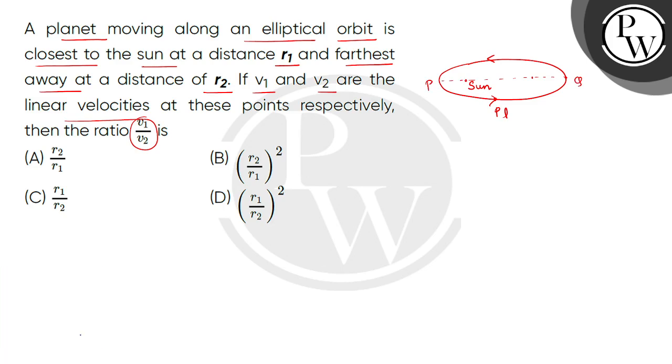Here, when the planet is closest to the sun, this distance is r1, and when farthest from the sun, the distance to the planet is r2.